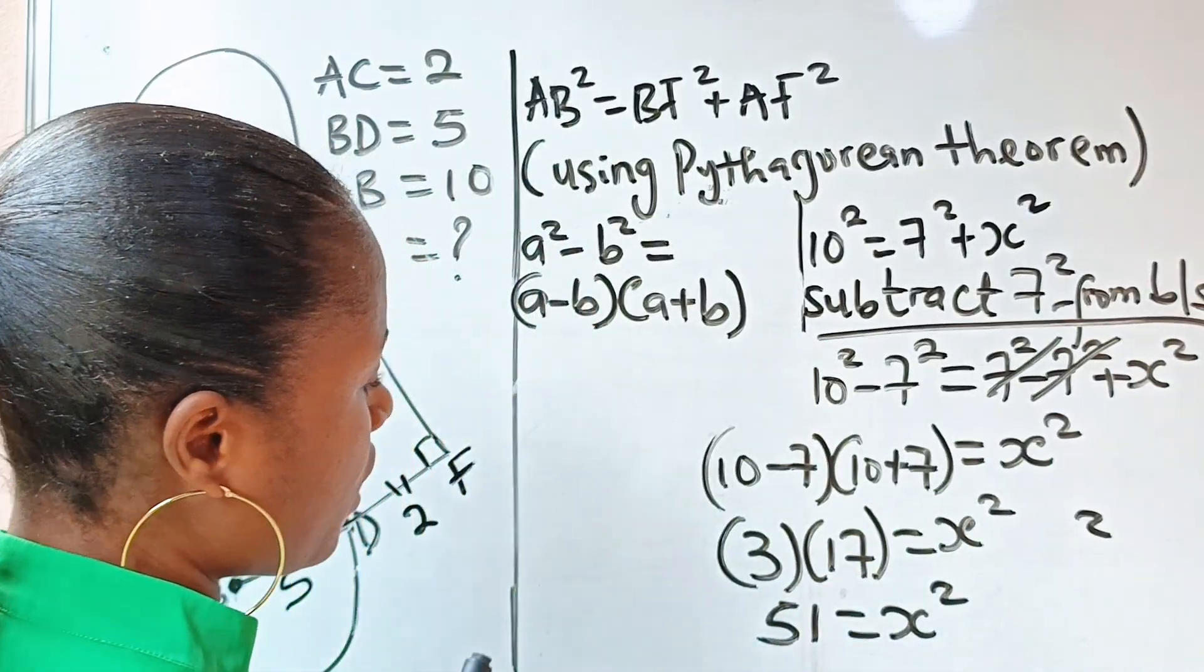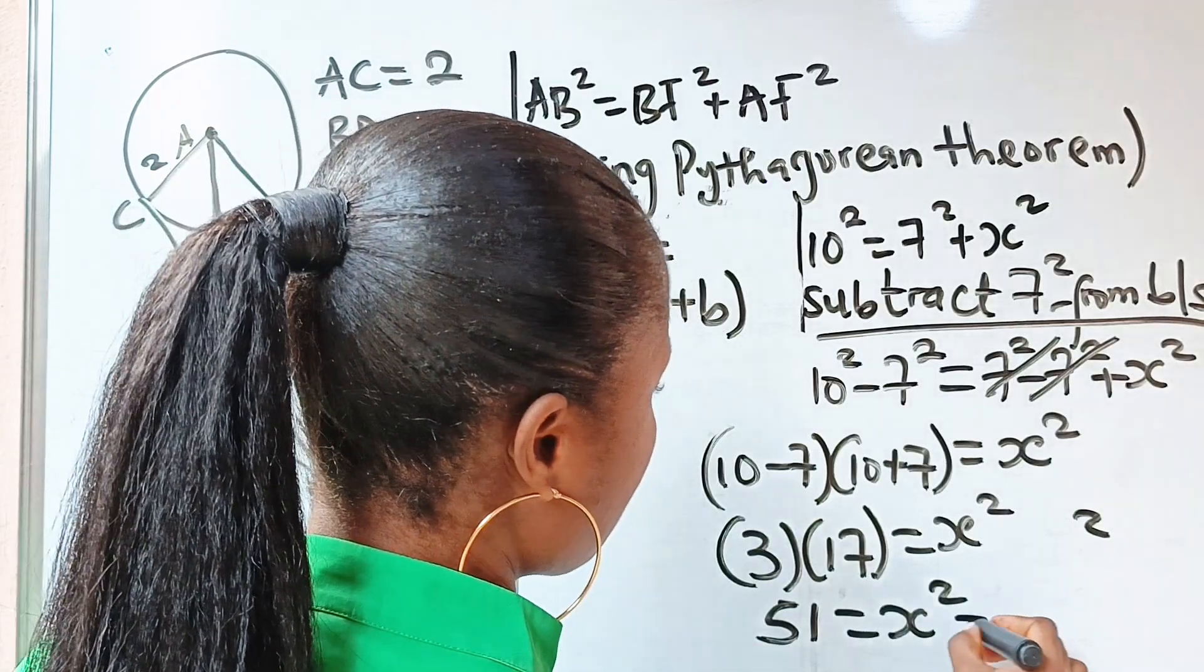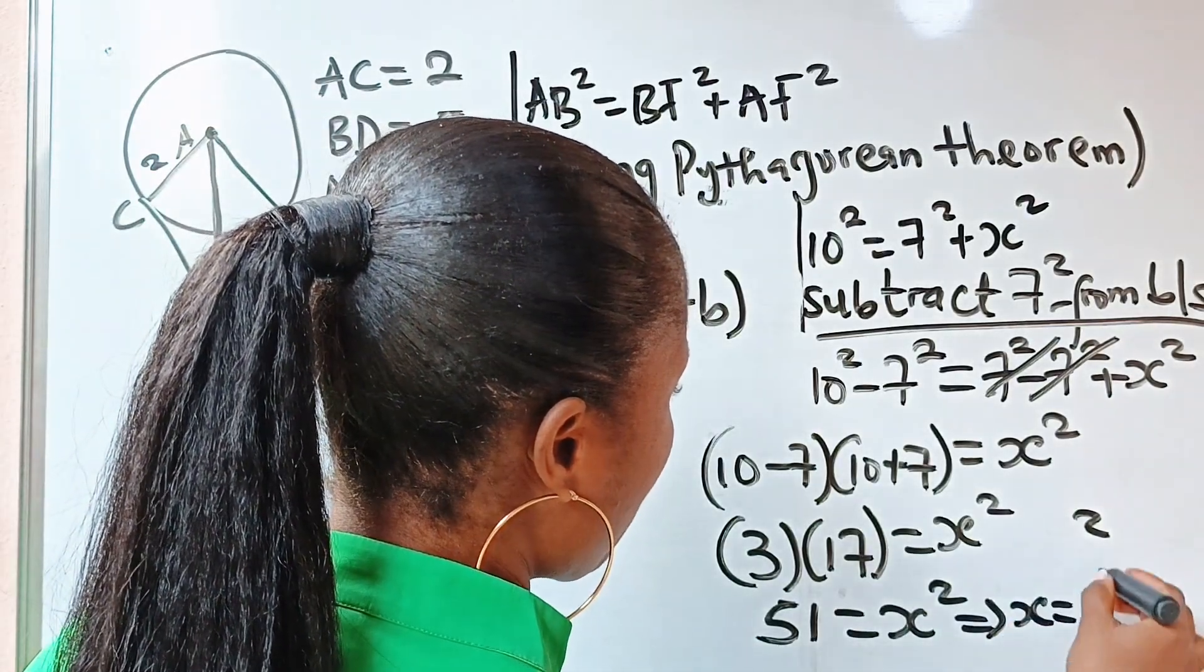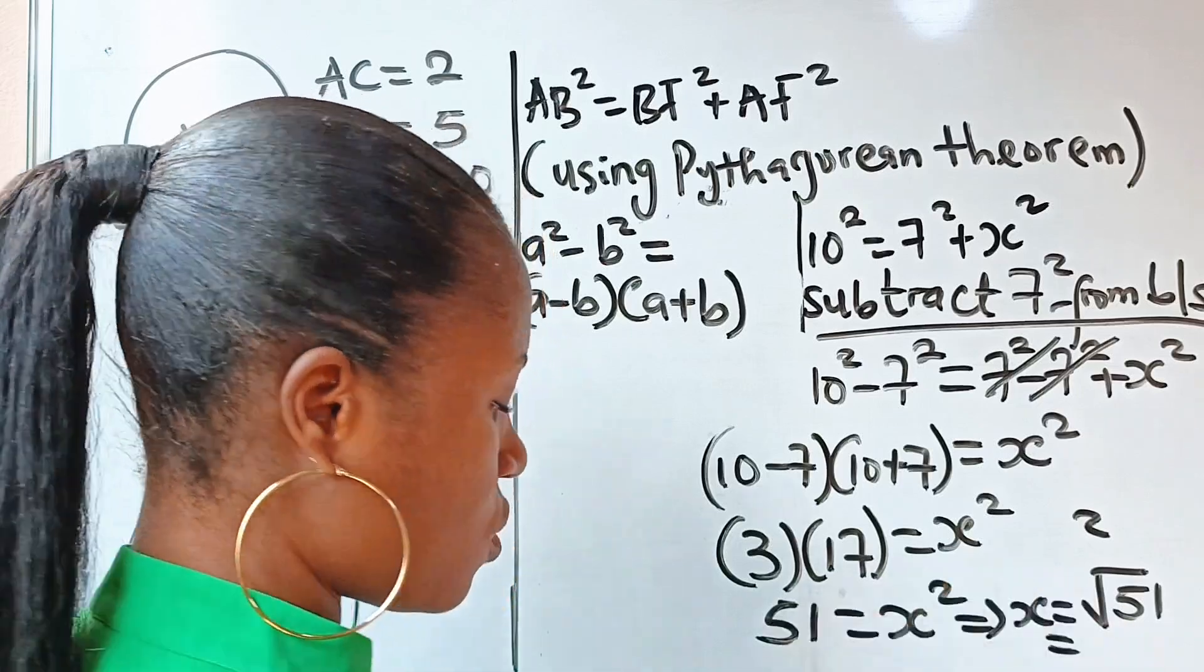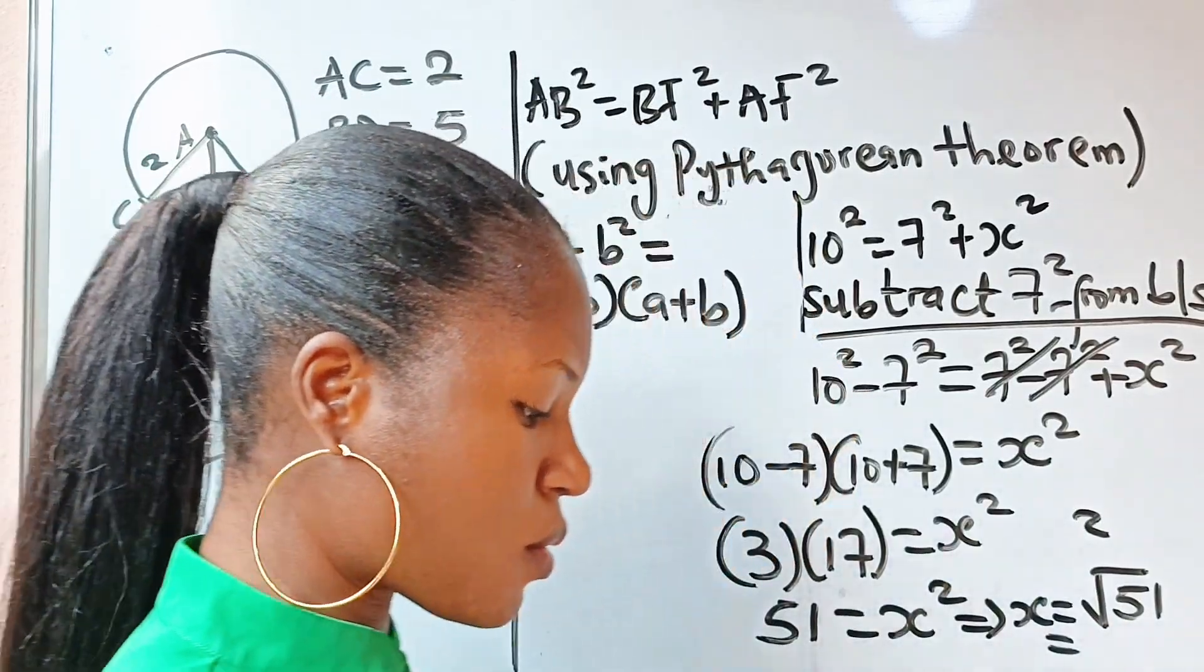So if we take square root of both sides, this implies that x will be square root of 51, which will be equal to, now let's find square root of 51.